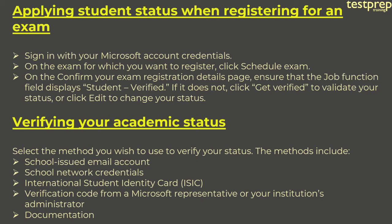Verifying your academic status: select the method you wish to use. The methods include: first, school-issued email account; second, school network credentials; third, International Student Identity Card (ISIC); fourth, verification code from a Microsoft representative or your institution's administrator; fifth, documentation.